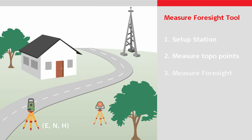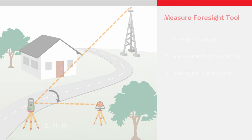We now decide we want to measure a foresight point — that is, a point over which we later want to set up the total station. Because we want to use it as a setup point, and therefore it should be measured to a higher accuracy, we want to measure the point multiple times, turning angles from the backside.